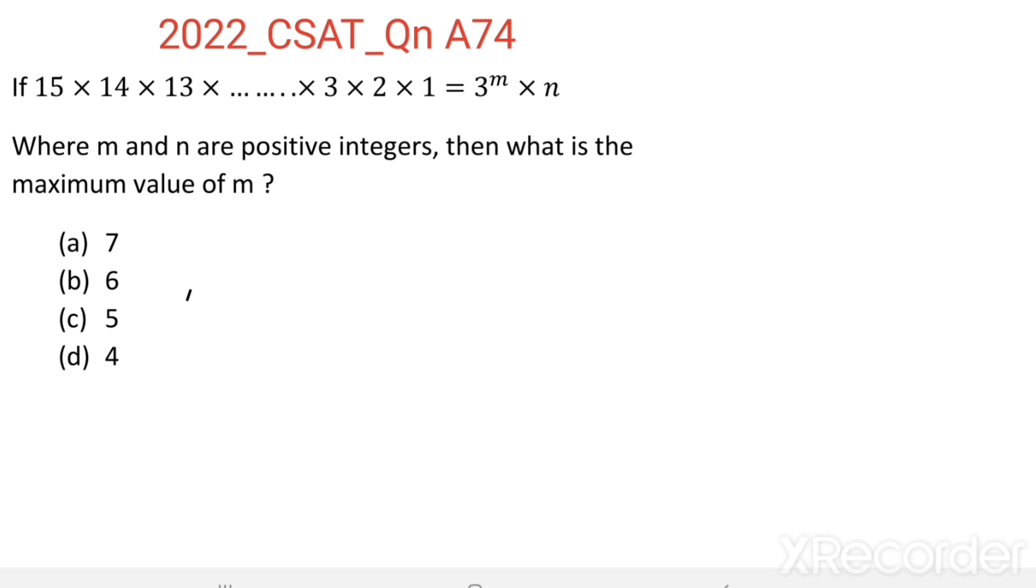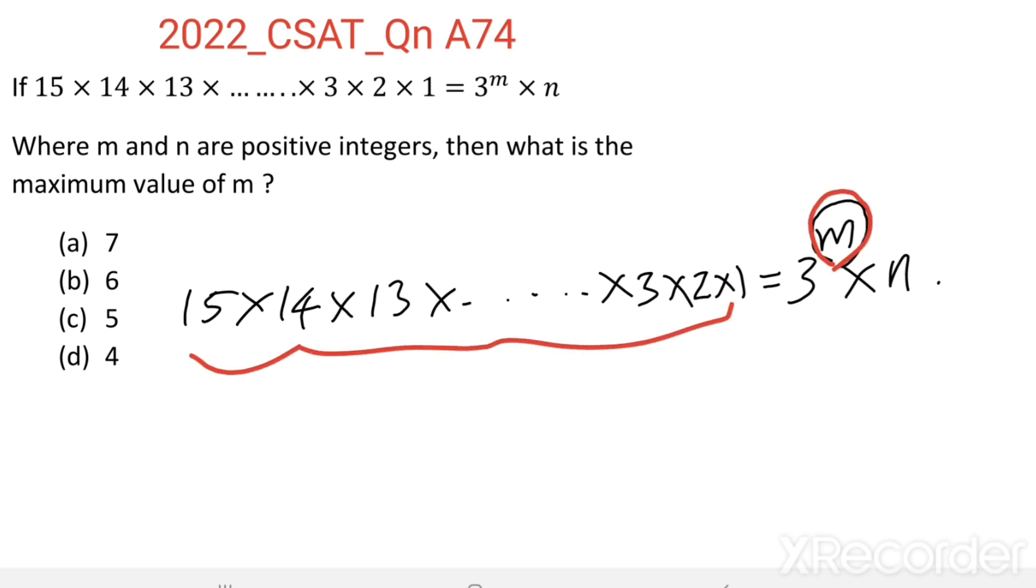15×14×13×...×3×2×1 = 3^m × n. We want to find the maximum value of m, that is, the maximum power of 3 in this product.